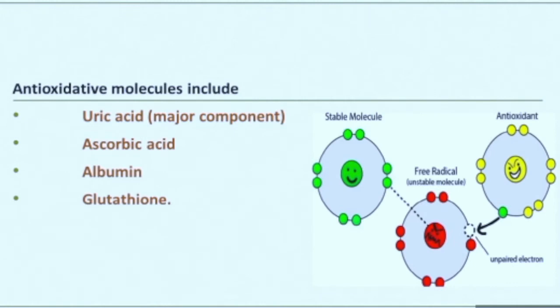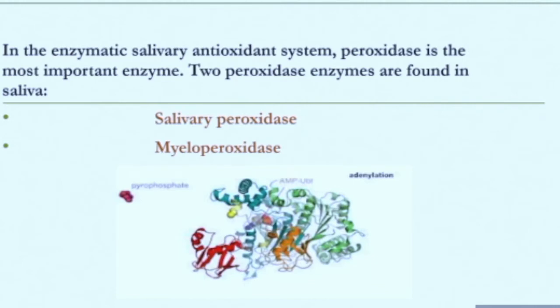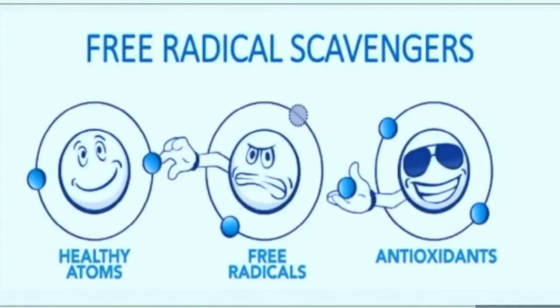Antioxidative molecules present in saliva are: one, uric acid; two, ascorbic acid; three, albumin; four, glutathione. In the enzymatic salivary antioxidant system, peroxidase is the most important enzyme. Salivary peroxidase and myeloperoxidase are the two peroxidase enzymes found in saliva.